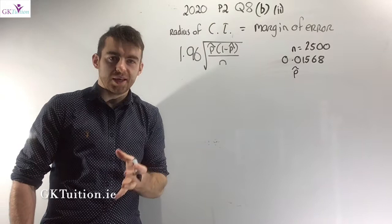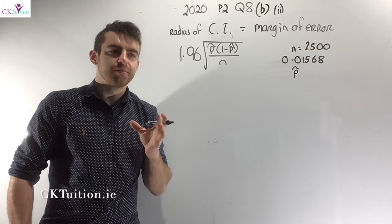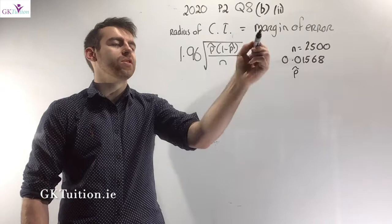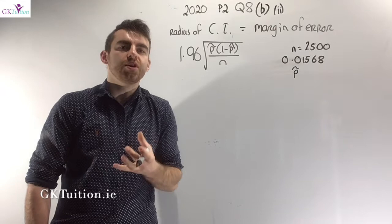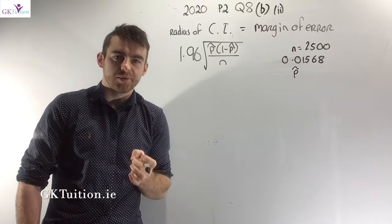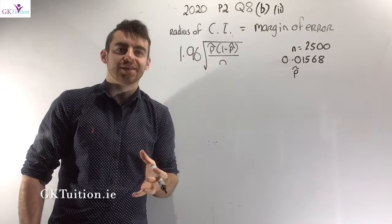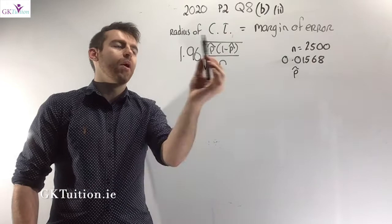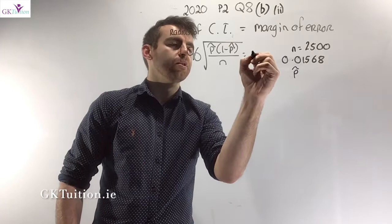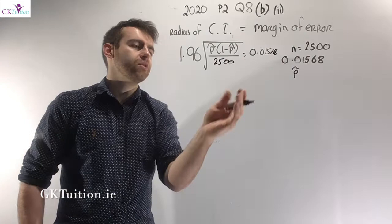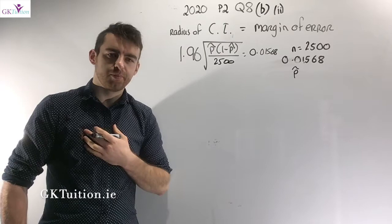When dealing with proportion, the margin of error is 1.96 multiplied by the standard error. The standard error for proportion is √(p-hat × (1 − p-hat) / n), found on page 35 of the maths tables. When we don't have access to the true proportion P, we use p-hat as a guideline. With n = 2500 and margin of error = 0.01568, we have one equation and one unknown.